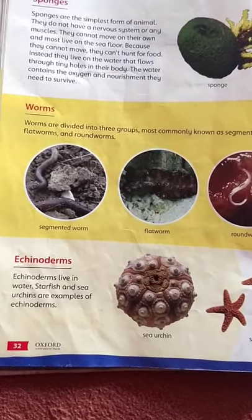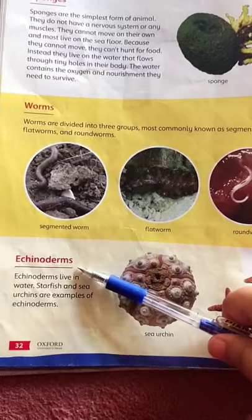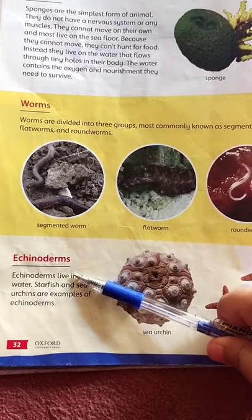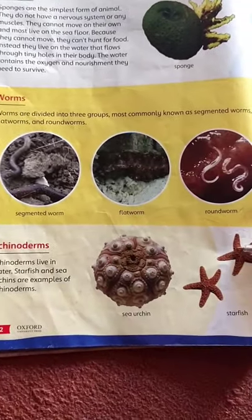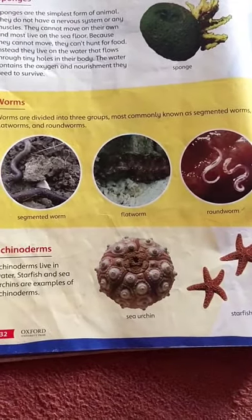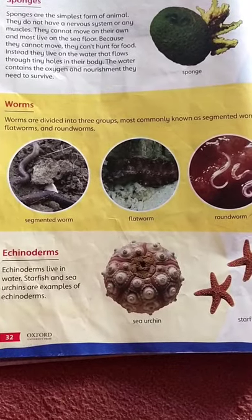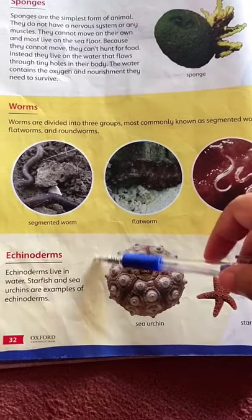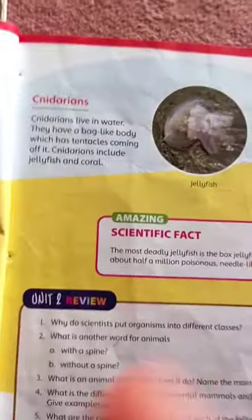The next invertebrate class is Echinoderms. Examples include starfish and sea urchins. This class is called Echinoderms and they live in the sea.